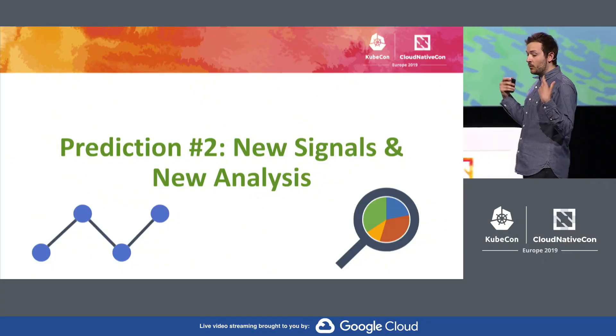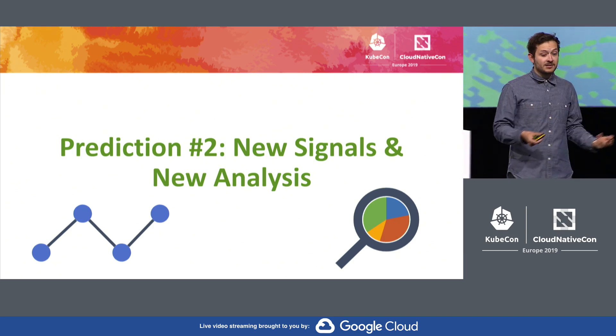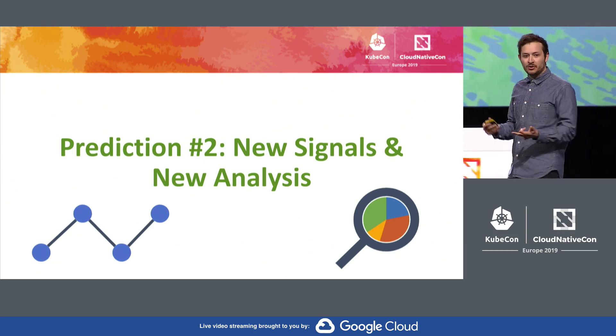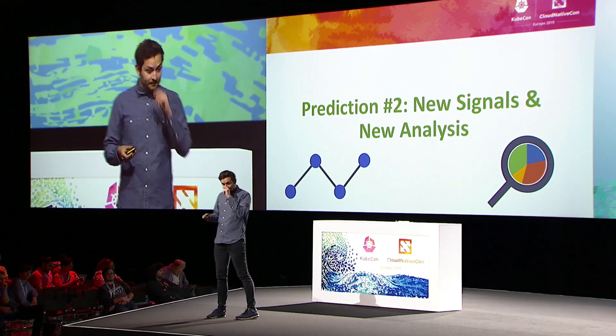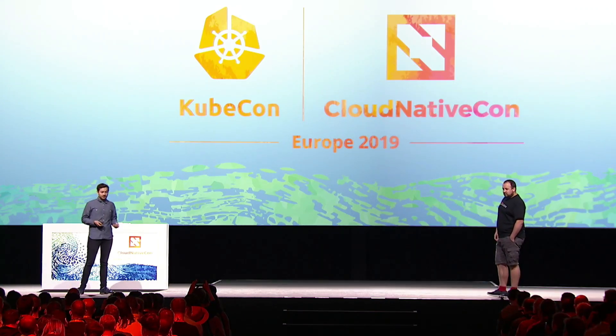Prediction number two is: we believe we are going to be seeing a lot more signals and new analysis. As humans, we like the number three — that's maybe why we've settled on the three pillars of observability. But we believe there is so much more data that can help us have insight into our running systems. And it doesn't stop with data; when we have this data, we actually need to do something useful with it. It's signals and analysis that are going to bring us forward. I want to show you a concrete example of what we might be calling the fourth pillar of observability.